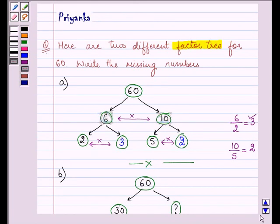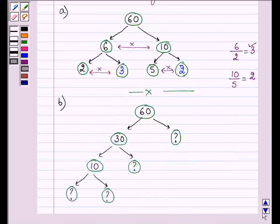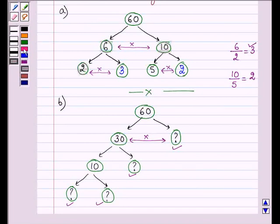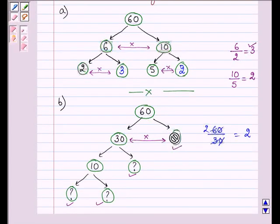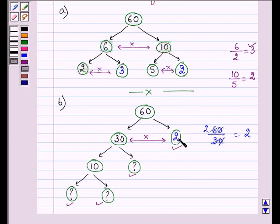Proceeding on with the next factor tree which is given to us. Let us start from the top. Now 30 should get multiplied with which number so that their product becomes equal to 60. So we'll divide 60 by 30 to get our answer and that comes out to be 2.